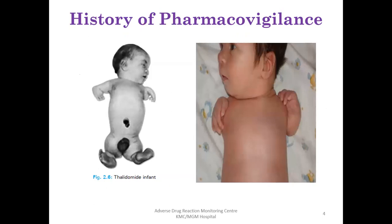Going back to the history of pharmacovigilance, we see phocomelia or 'seal limbs,' an ADR reported in the 1960s due to a drug called thalidomide. The thalidomide and sulfanilamide elixir tragedies alerted various regulatory bodies across the globe, establishing the need for a pharmacovigilance program and various regulations worldwide.